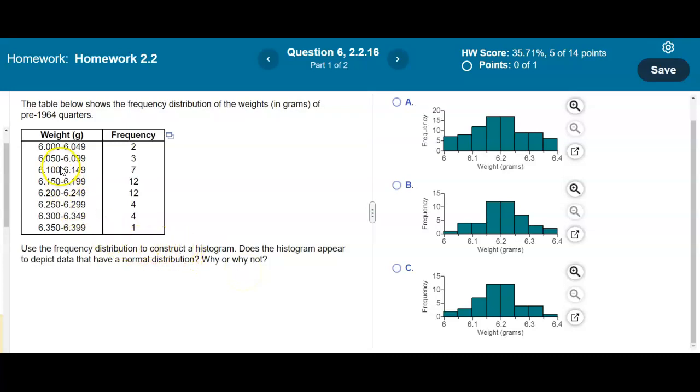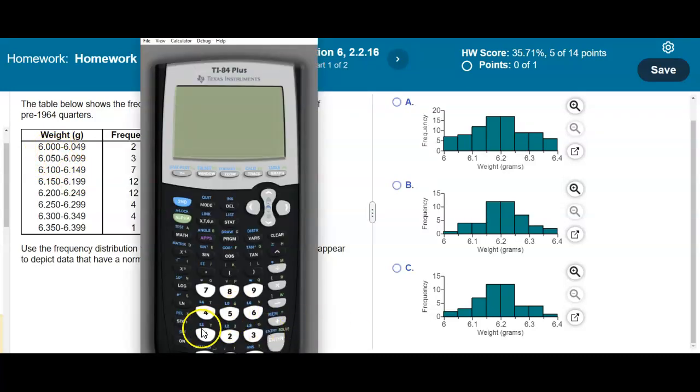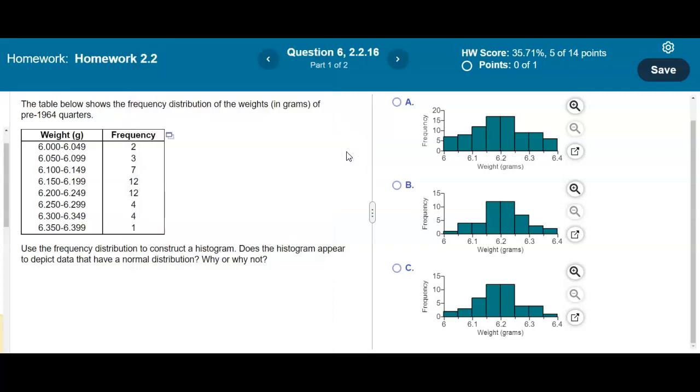First, let's identify the lower class limit. The lower class limit is 6.000. The next lower class limit is 6.050, so we can determine the class width. If we take 6.050 and subtract 6.000, we get a class width of 0.05.